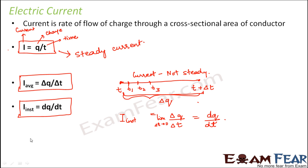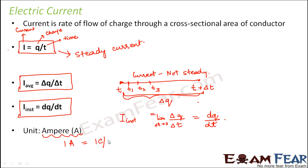Current is measured in amperes, written as A. One ampere is equal to one coulomb per second — that is, when one coulomb of charge flows in one second, the current is said to be one ampere.